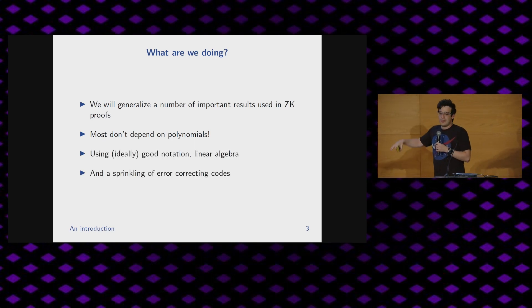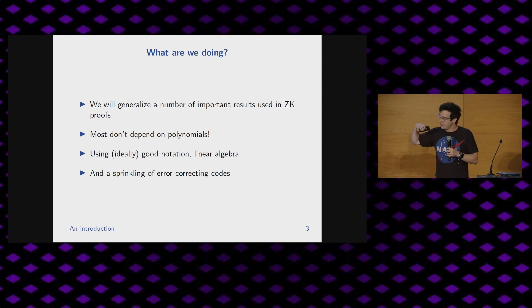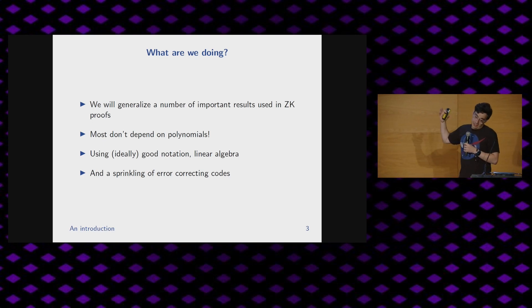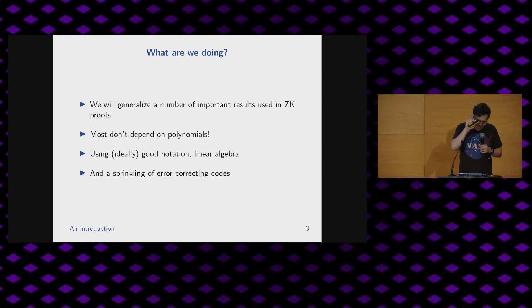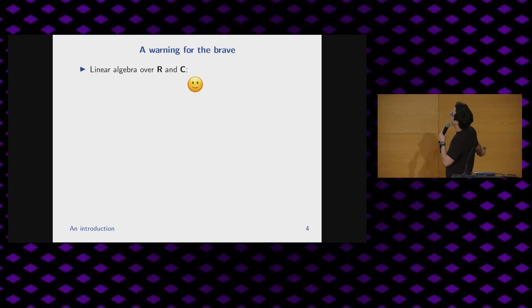There are actually properties of something called error-correcting codes. The idea is to do this with, hopefully, good notation, linear algebra, and just a tiny, tiny, tiny sprinkle of ECCs.